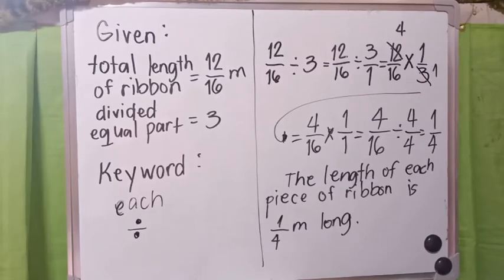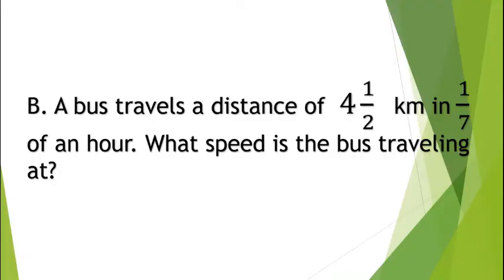So we can say that the length of each piece of ribbon is 1 fourth meter long. This is how we solve a word problem. Let's try letter B. A bus travels a distance of 4 and 1 half kilometers in 1 seventh of an hour. What speed is the bus traveling at?